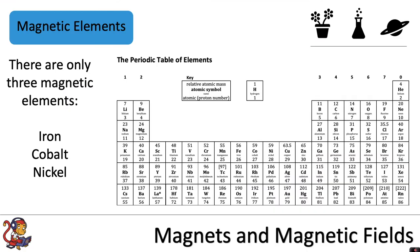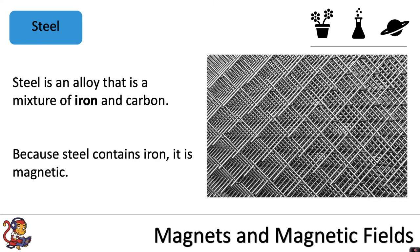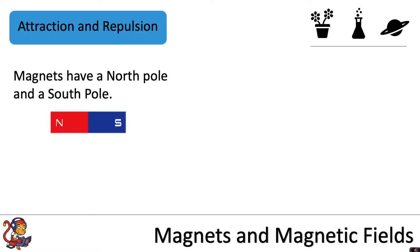There are only three magnetic elements: iron, cobalt, and nickel, and these are found within the transition metals of the periodic table. Steel is an alloy — a mixture of iron and carbon — so because steel contains iron it is magnetic, but because it's a mixture you won't find it on the periodic table.